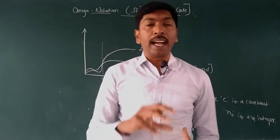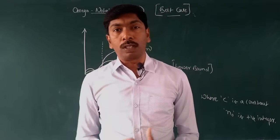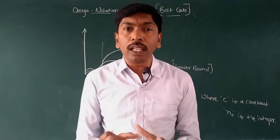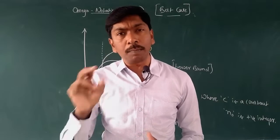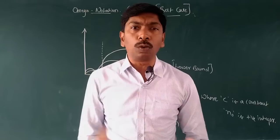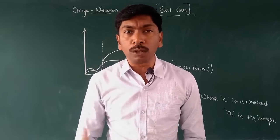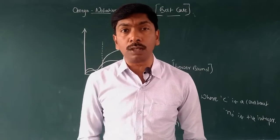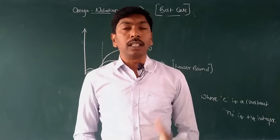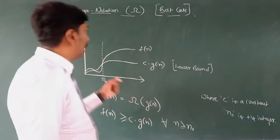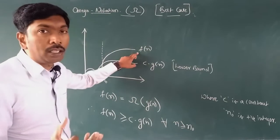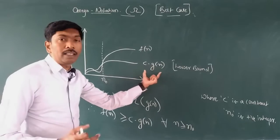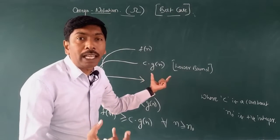For example, from Bangalore to Mysore, the minimum time taken is one and a half hours or one hour. That minimum time — say five minutes, one minute, one second, or zero seconds — is the best case. That is f(n), the lower bound, which is the minimum time taken.